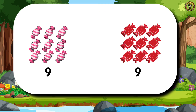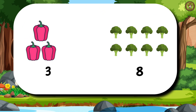We have 9 candies on each side. Tell me, which sign will come here? That's right. Here, we will use the sign for equal to. Then comes 3 capsicums and 8 broccolis. Tell me, which sign will come here for less than? That's right. Here, we will use this sign for less than.